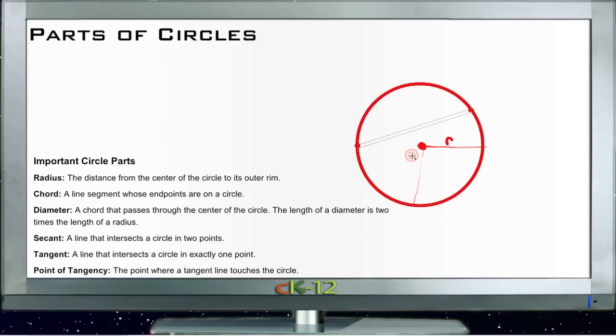The diameter would be a chord that passes through the center of the circle. So if we have a chord that goes right across through the middle, from any point to any point, as long as it goes through the middle, that represents the diameter. The diameter is usually abbreviated with D.